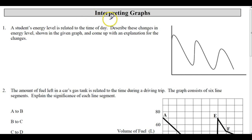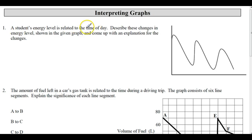Interpreting graphs. A graph is a way of showing a relation — one of many ways. Other ways include tables of values, ordered pairs, words, equations, etc. A graph is a picture of the data. In this case, a student's energy level is related to the time of day, with energy level on one axis and time of day on the other.